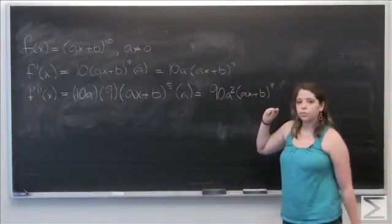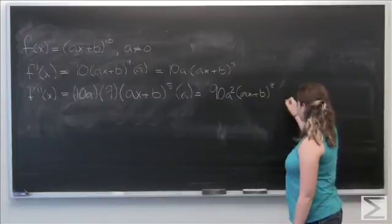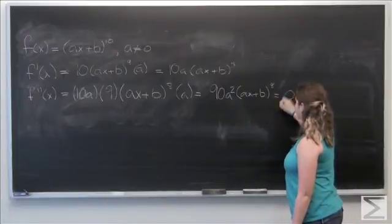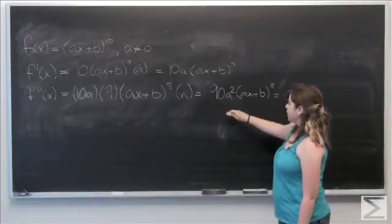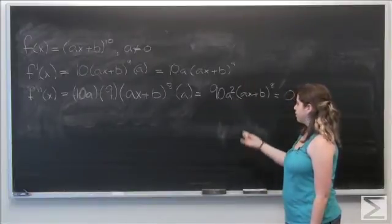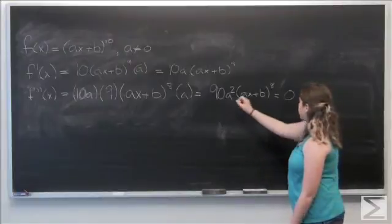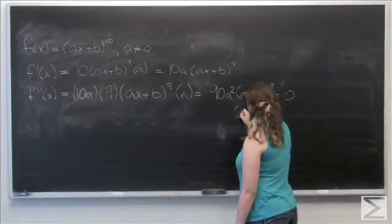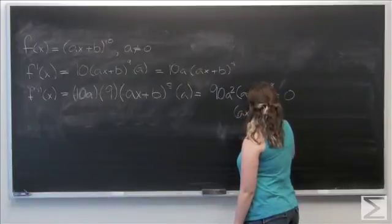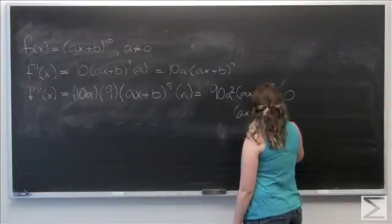So we want to find when this is equal to 0. Easiest way, set it equal to 0 and solve for x. So 90 and a squared are just constants, so let's divide both sides by that. We just end up with ax plus b to the 8th equals 0.